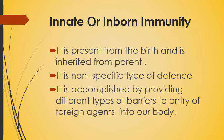Innate immunity is accomplished by providing different types of barriers to the entry of foreign agents into our body. In innate immunity we have barriers — one after another. After crossing all the barriers, only then can the pathogen, the infectious agent, or the foreign particle harm our body. Such immunity, which is accomplished by providing different types of barriers to the entry of foreign agents and is non-specific, present from birth and inherited from parents, is known as innate or inborn immunity.